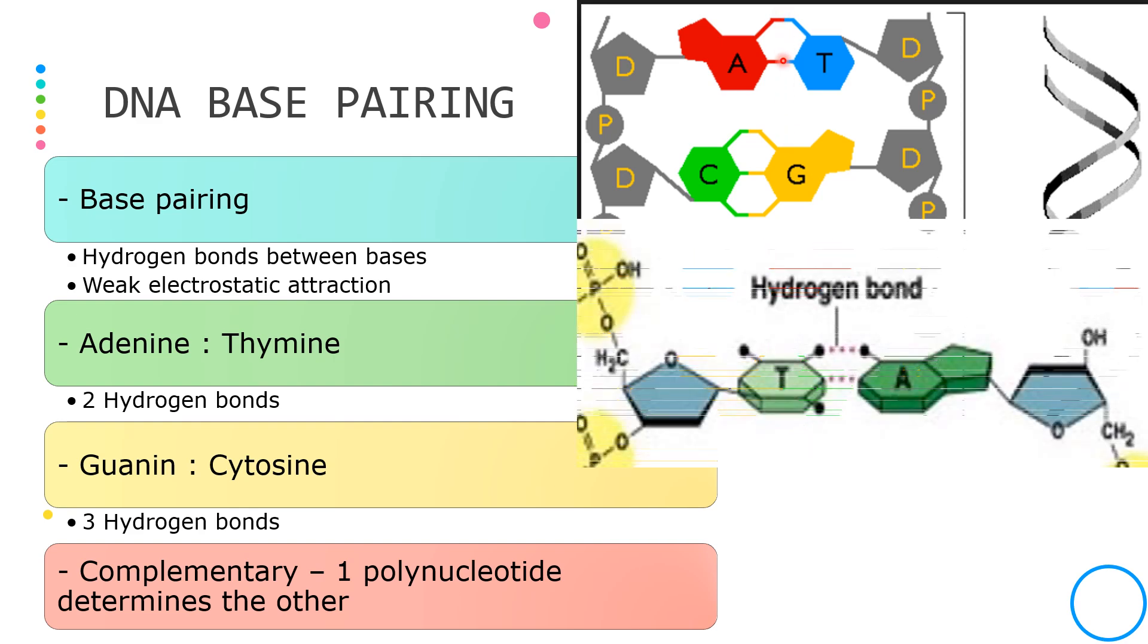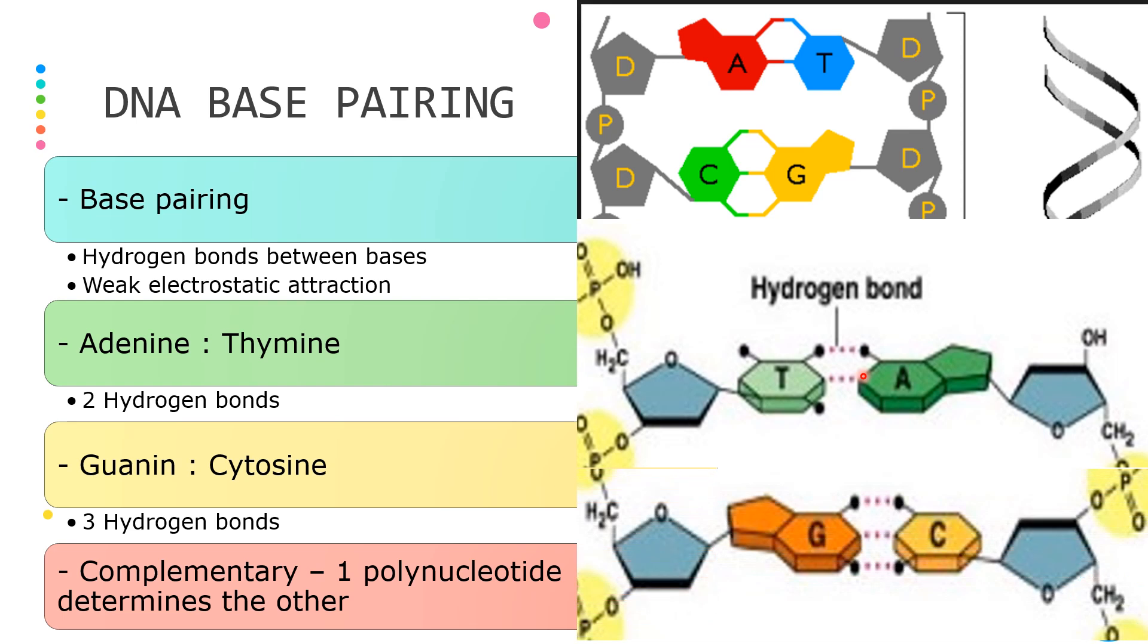The base pairing between adenine and thymine involves two hydrogen bonds. Guanine and cytosine involves three hydrogen bonds.